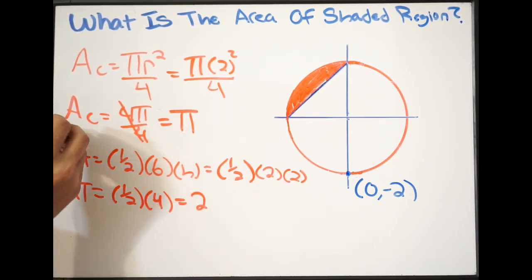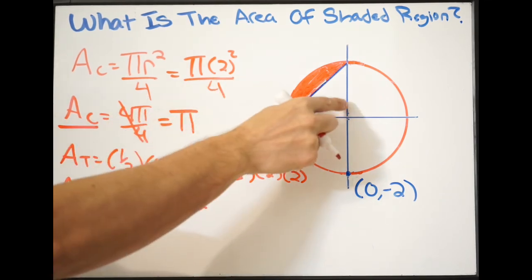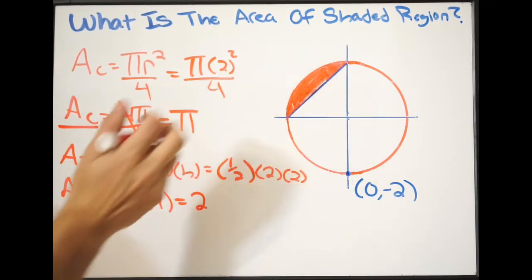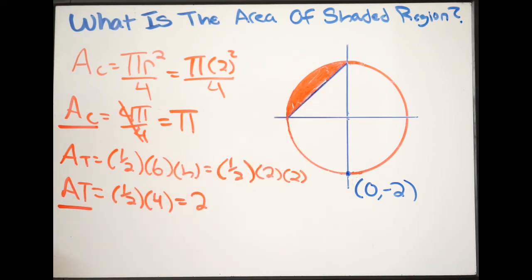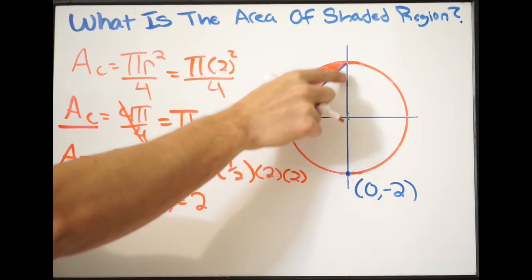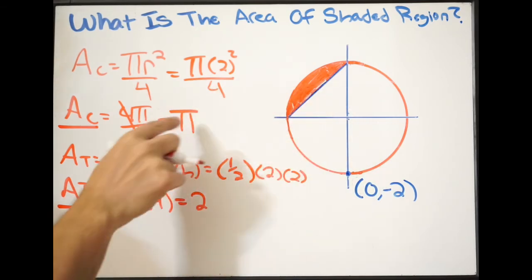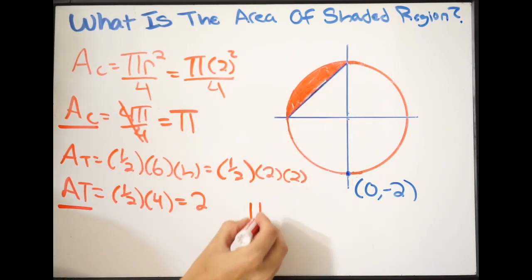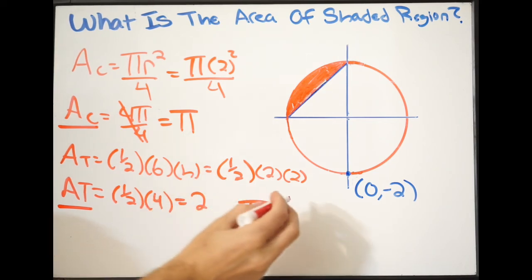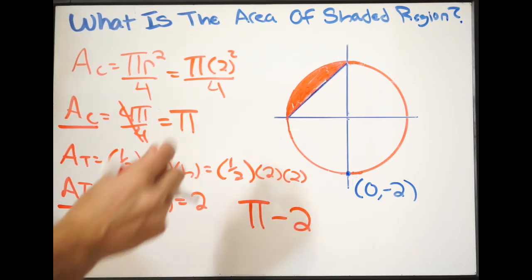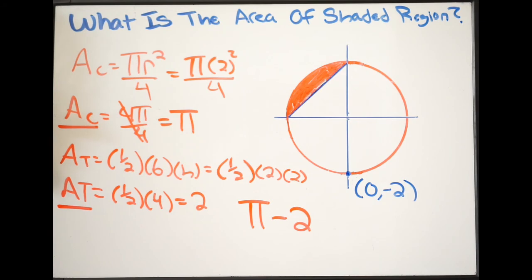So this is what we need here. We have the area of our circle right here, our quarter circle, and the area of our triangle right here. So if I simply just take this area of the circle, this section that we have, which is pi, so if I do pi minus the area of the triangle, which we have right here, which is 2, that's going to give me the area of this shaded region.